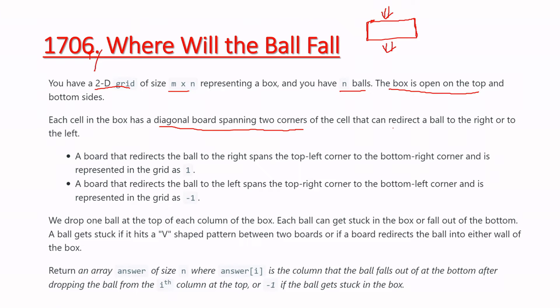Each cell in the box has a diagonal board spanning two corners of the cell that can redirect a ball to the right or the left. The board that redirects the ball to the right spans the top-left corner to the bottom-right corner.